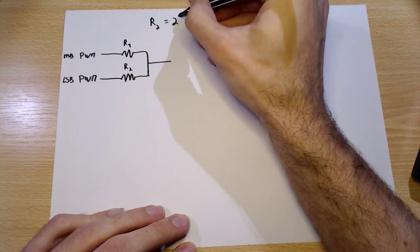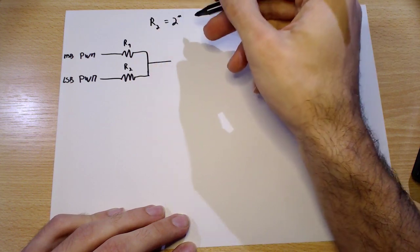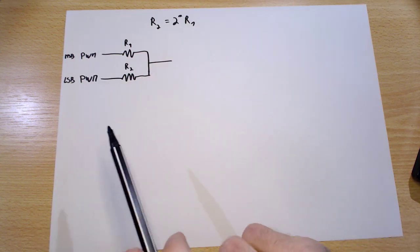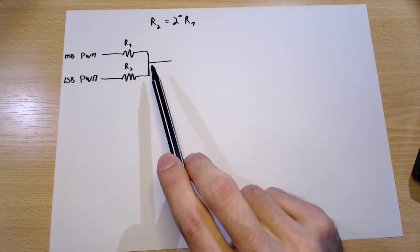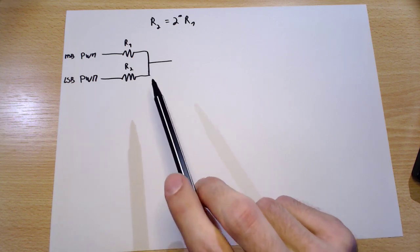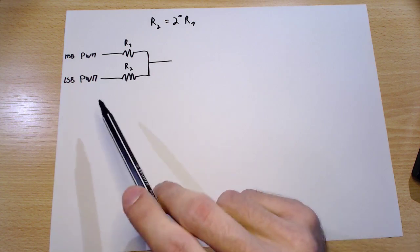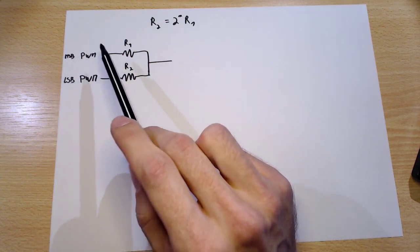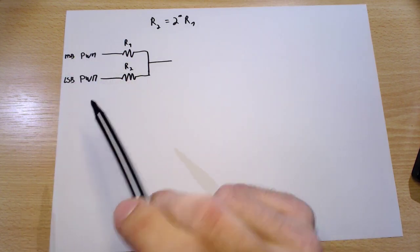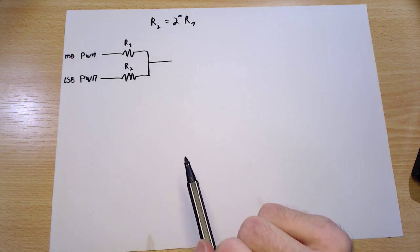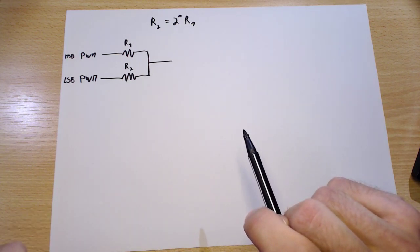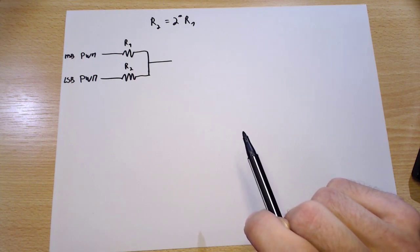If you make it so that the LSB resistor value is 2^n times larger than the MSB resistor value, that means the contribution to the output voltage is going to be much less for the LSB. So you have finer control using the LSB and more control of the voltage but less precision with the MSB — which is exactly what you want.